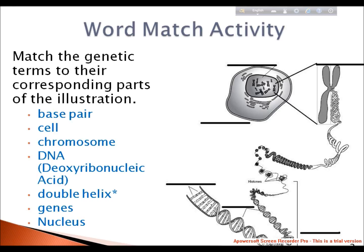Now, the match activity: match the genetic terms to their corresponding parts of the illustration. The terms are: base pair, cell, chromosome, DNA (deoxyribose nucleic acid), RNA, double helix, genes, and nucleus. These will be discussed in detail later.